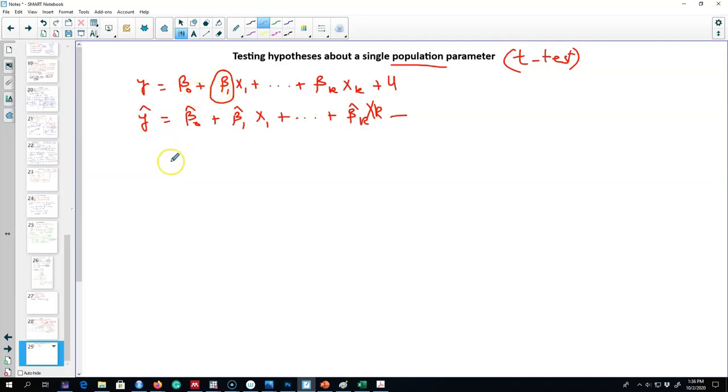If the assumptions of the OLS estimator are met, the assumptions we discussed so far, then we can standardize these beta coefficients. These beta coefficients are the slope parameters, and they will follow a t-distribution with these many degrees of freedom.